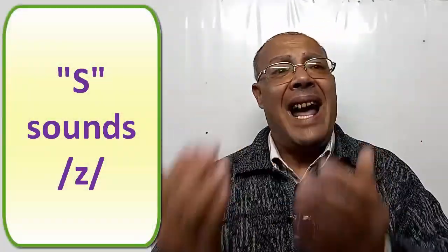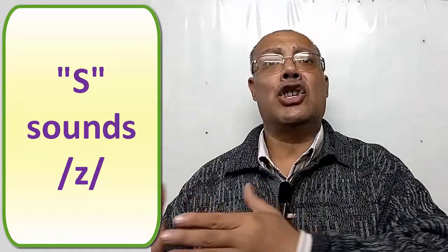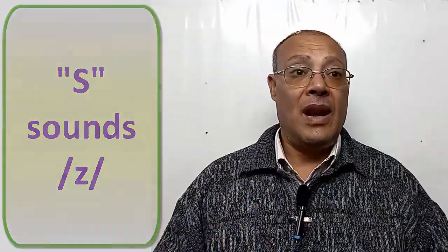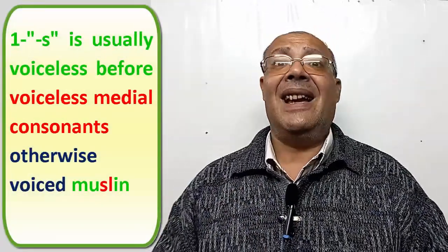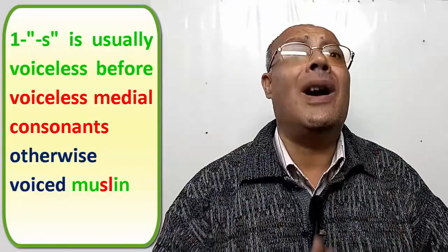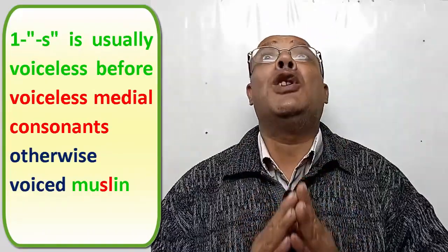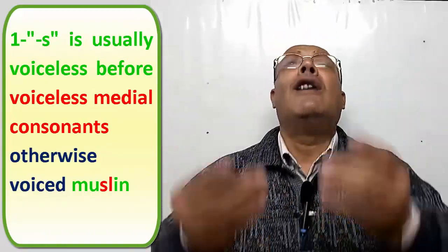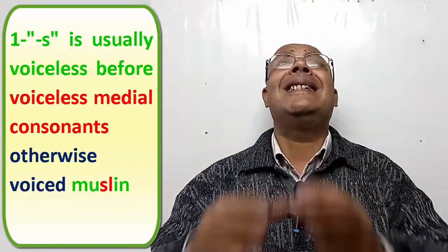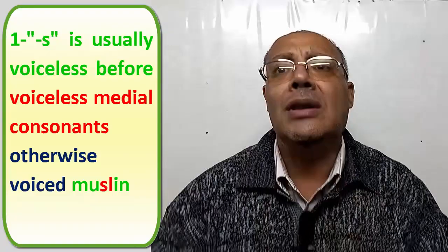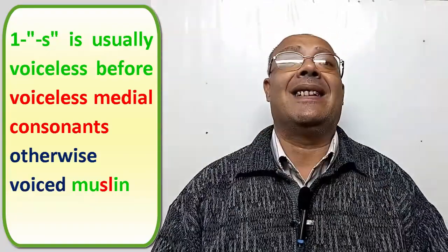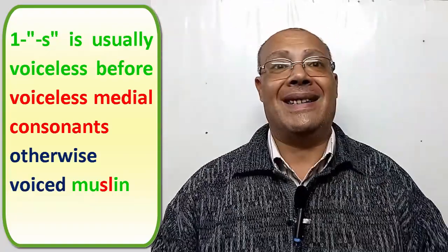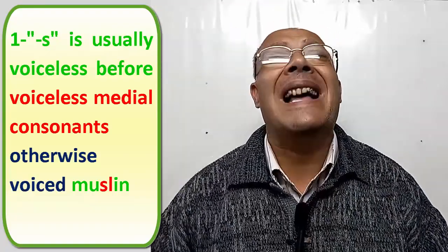S sounds Z. S is usually voiceless before voiceless medial consonants. Otherwise, voice it — for example: muslin.